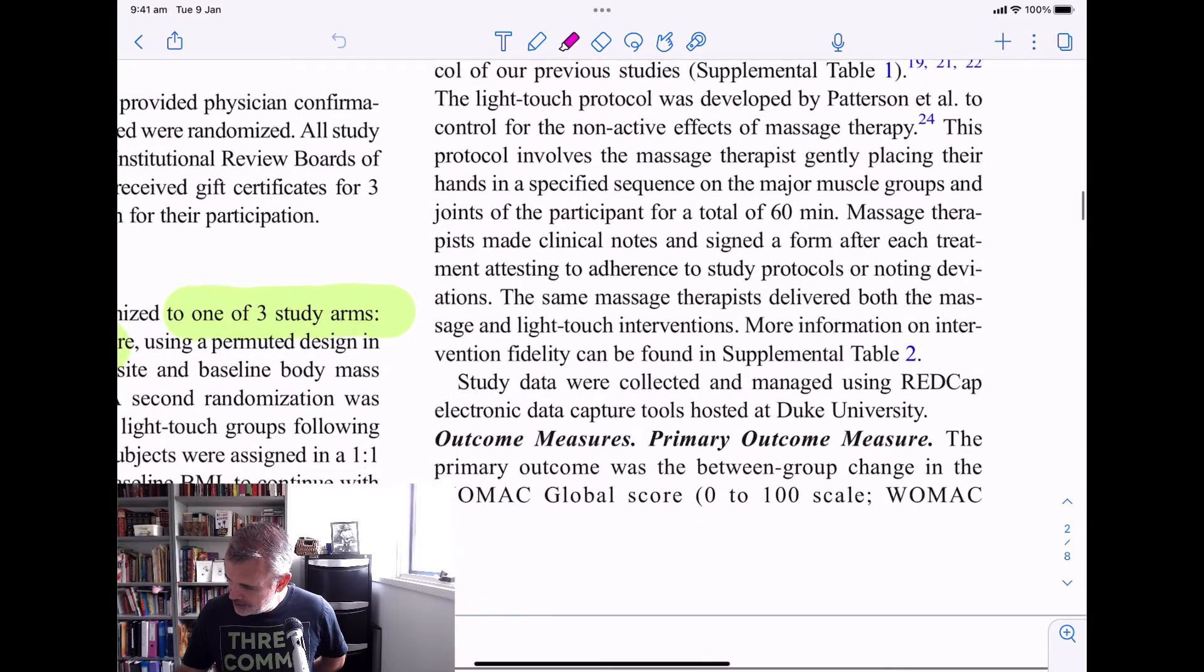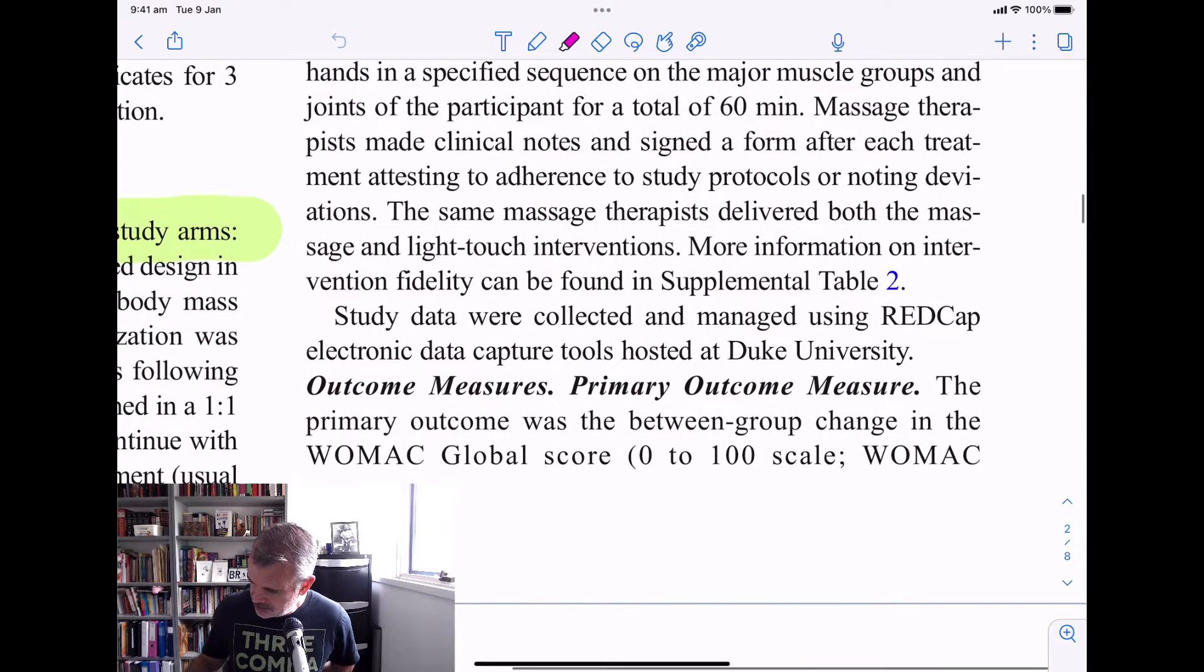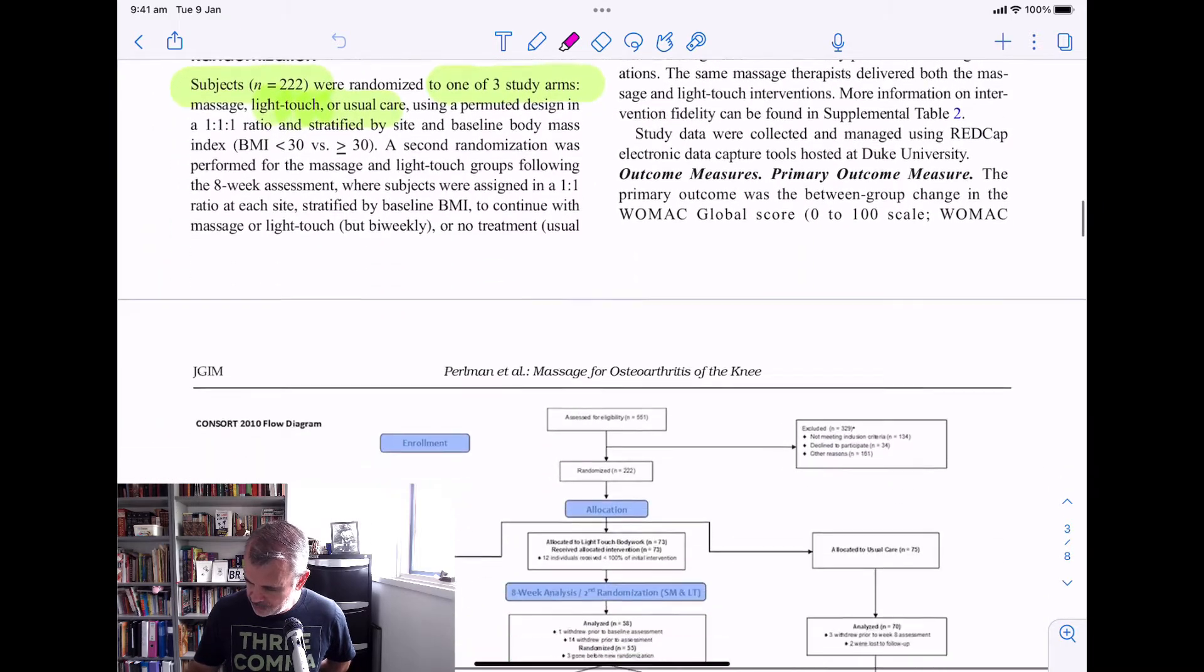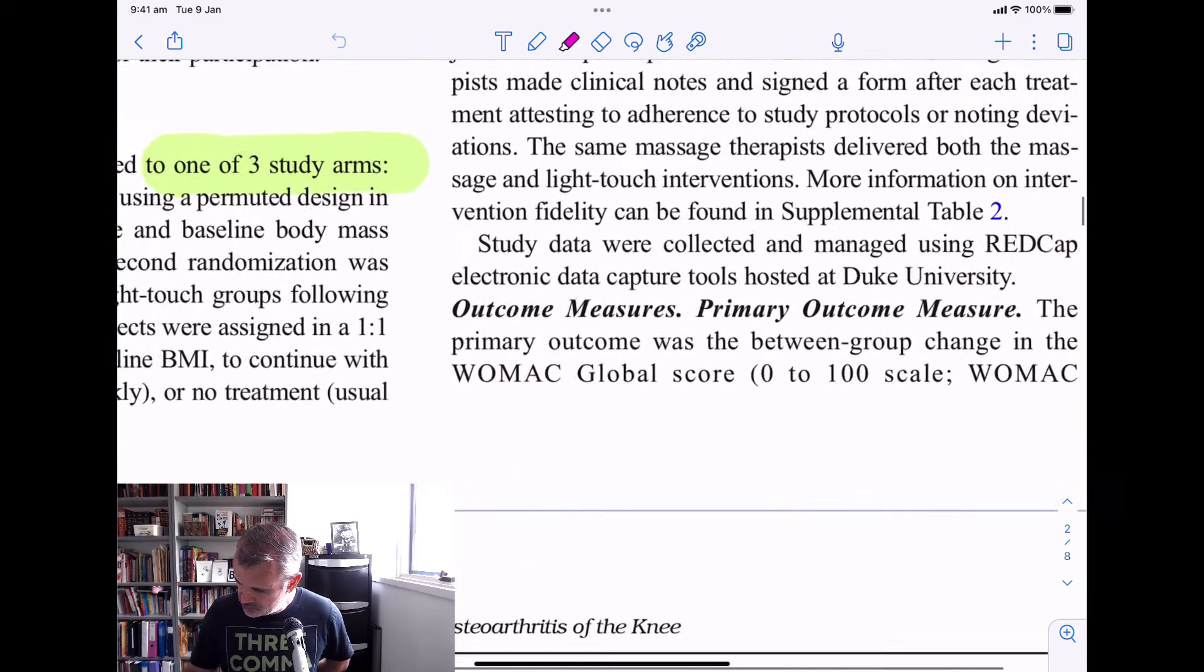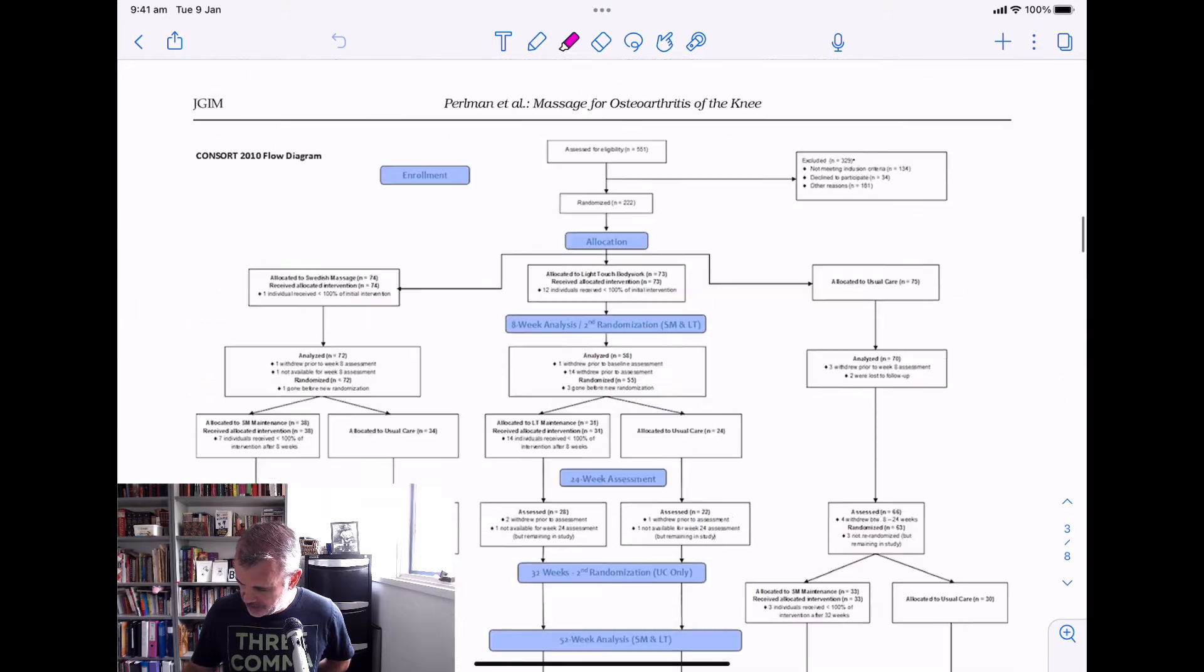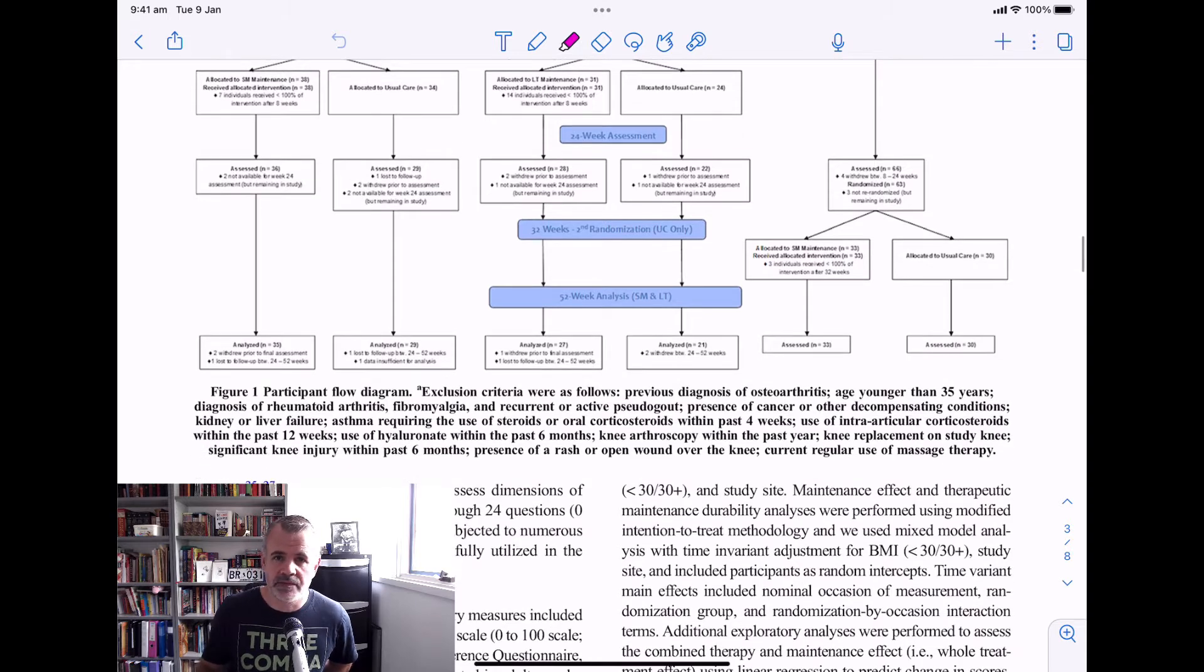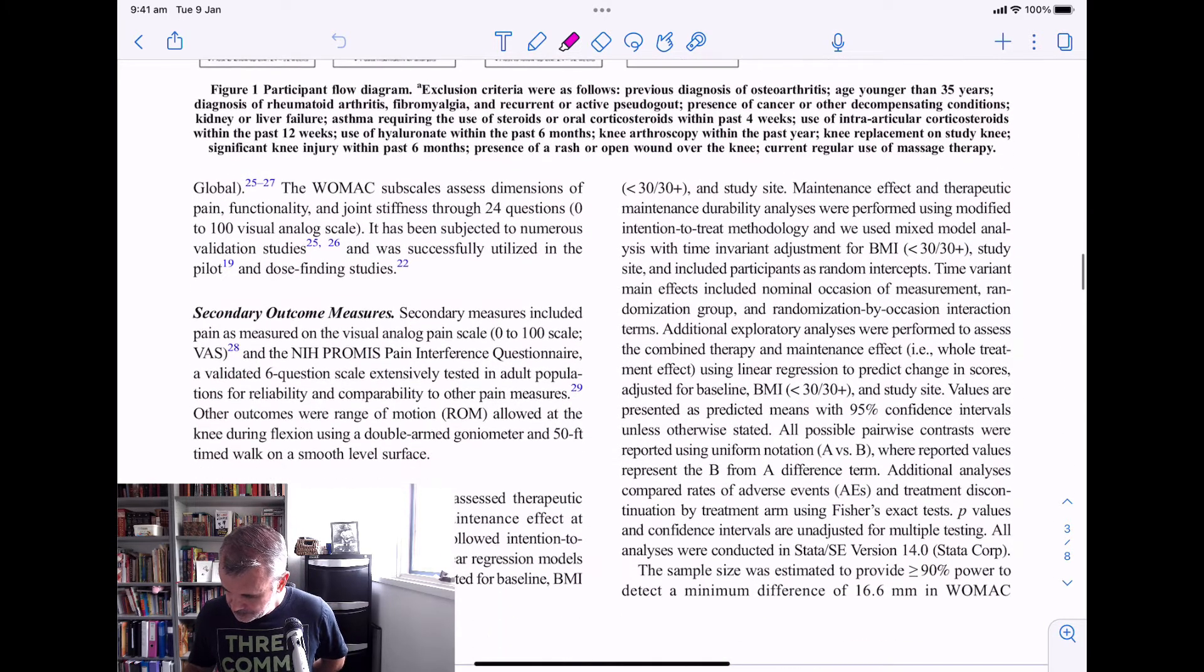So how they established baselines, they did a questionnaire, which was a WOMAC, they got a WOMAC global score. So the WOMAC global score is an outcome measure developed by the Western Ontario Osteo-something-something-something. Anyway, it's a standard measure questionnaire for people with osteoarthritis of the knee or hip. Includes scores for stiffness, pain, and functional ability.